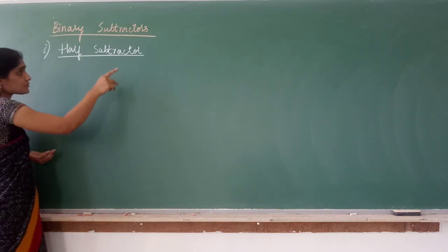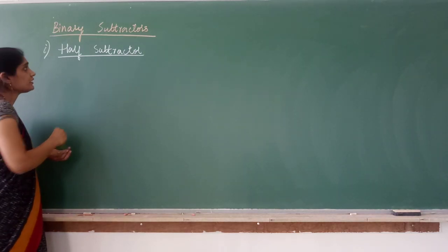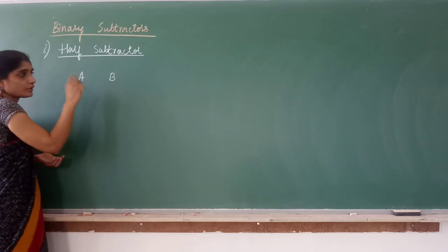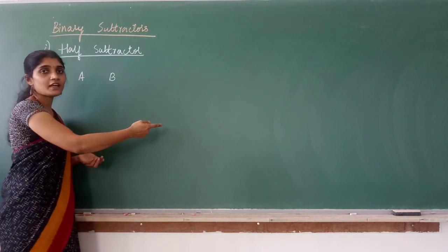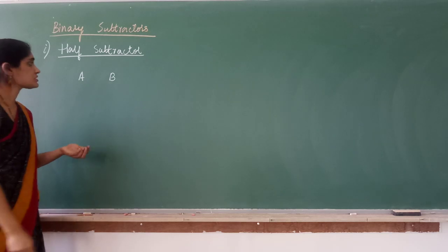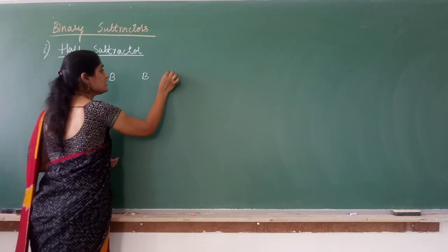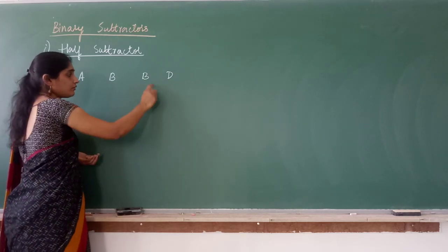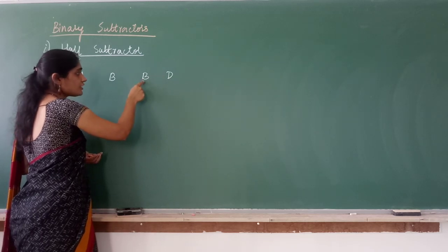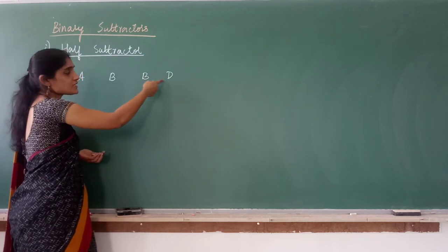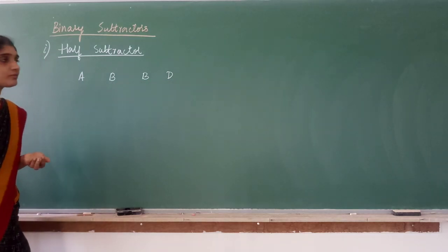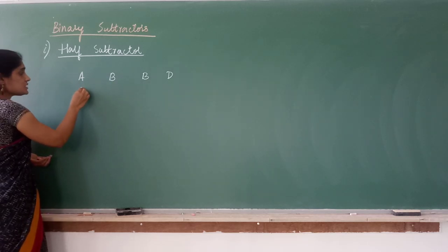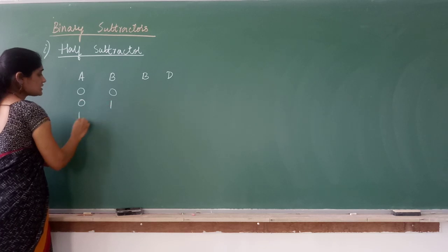Just like half adder, half subtractor has two inputs — one bit each. In an adder we have two outputs: sum and carry. Similarly here we have borrow and difference. Two numbers each of one bit, so the possible input combinations are: 0-0, 0-1, 1-0, and 1-1.